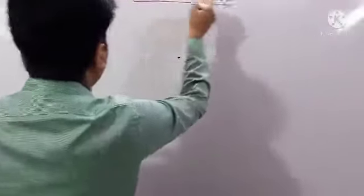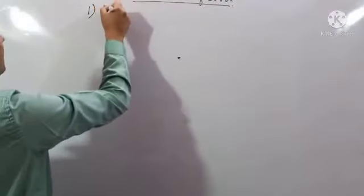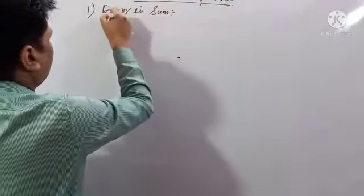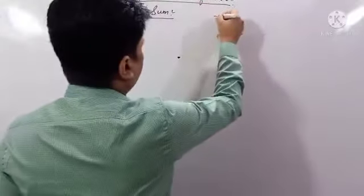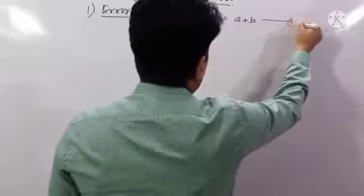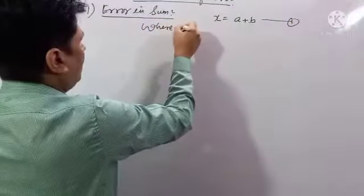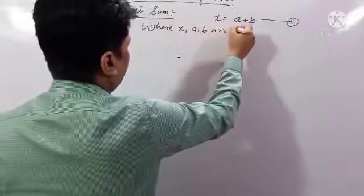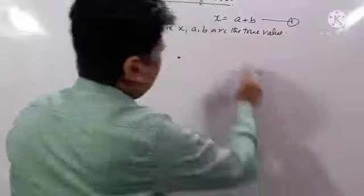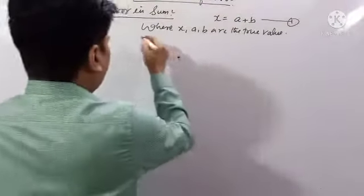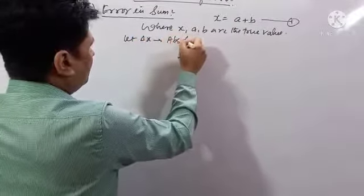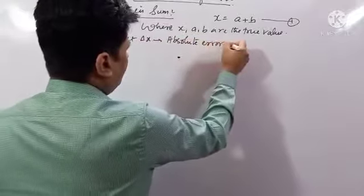First is error in sum. Like, x is equal to the sum of a plus b, where x, a, b are the true values. This is the equation for true values. Let delta x — this is called the absolute error in x.